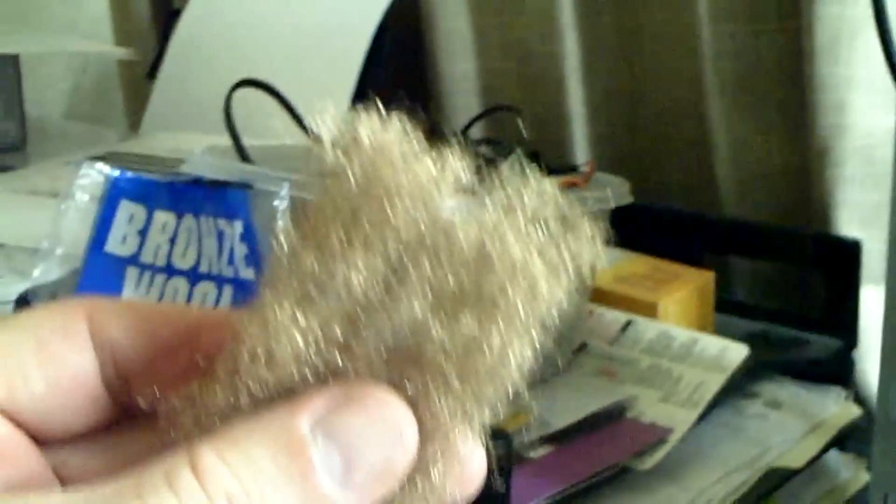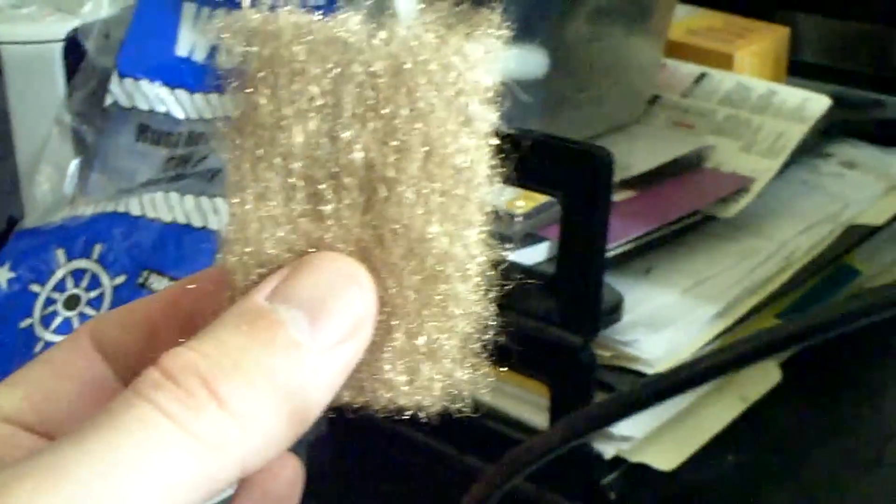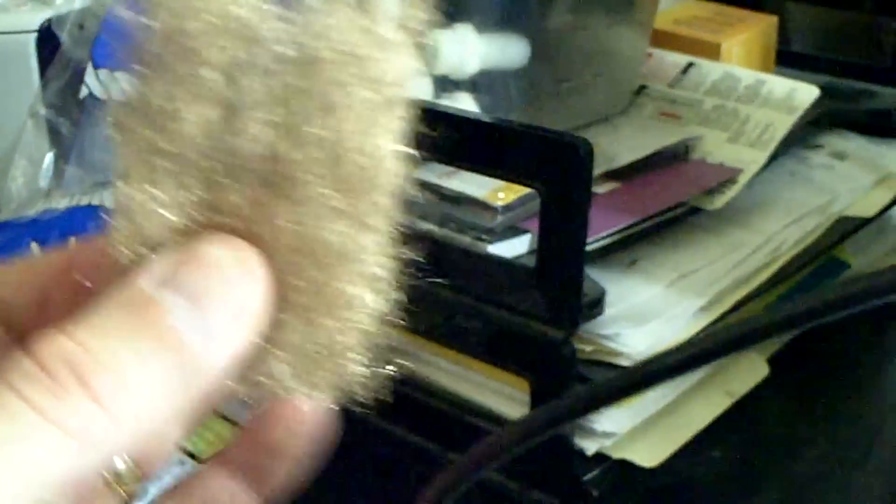I had some fine bronze wool floating around and so I cut it into a small little section like this and then put it in between the positive and negative plate on this little cell that I was playing with in the last video.